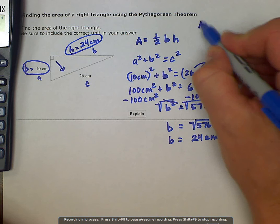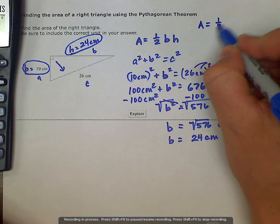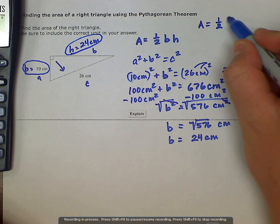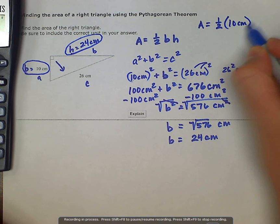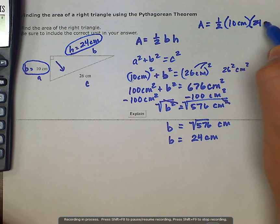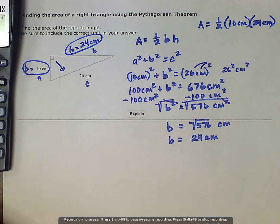So our area is equal to 1 half times our base, which is 10 centimeters, and our height, which is 24 centimeters.